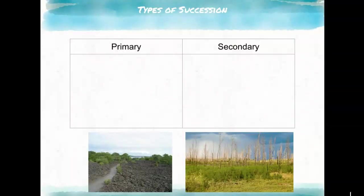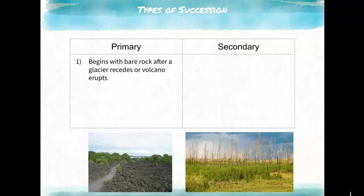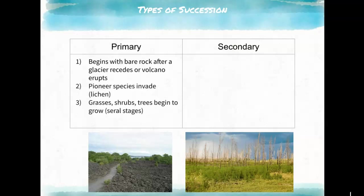There are two types of succession. Primary succession begins with bare rock — this can happen when a glacier recedes and exposes rock underneath, or when a volcano erupts and magma hardens into rock. The lichen must then break the rock down into soil before grasses, shrubs, and trees can eventually grow to reach the climax community.